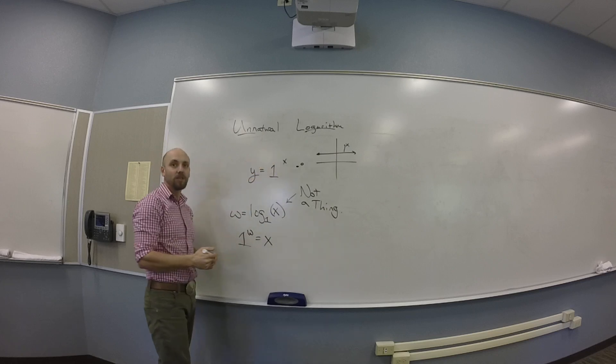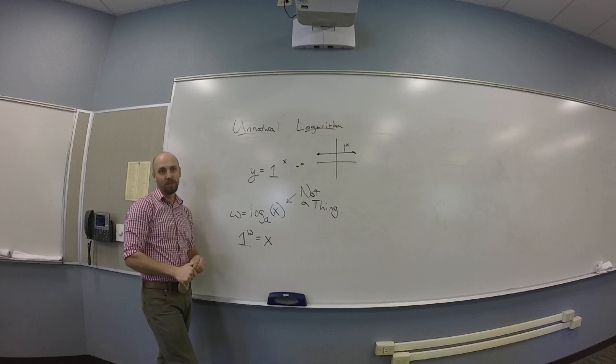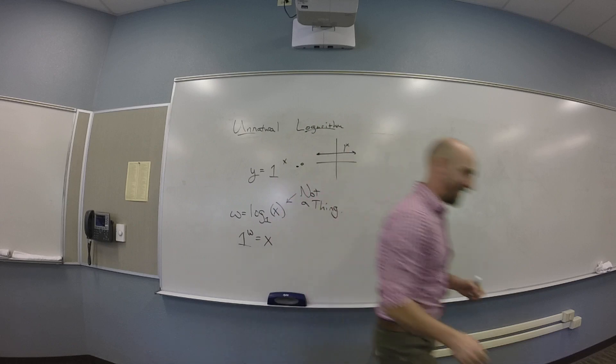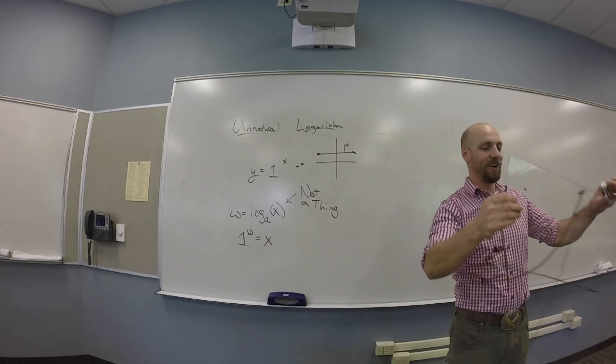Because the 1 to the x function is a horizontal line, it fails the horizontal line test, so there is no inverse. That was a great exchange. Let's do it up here.